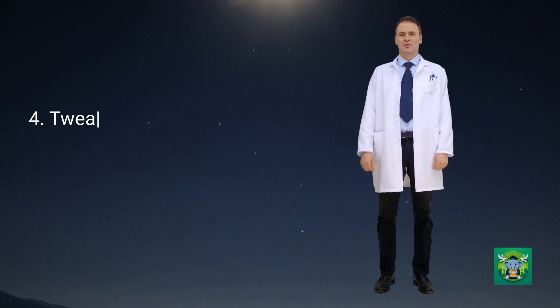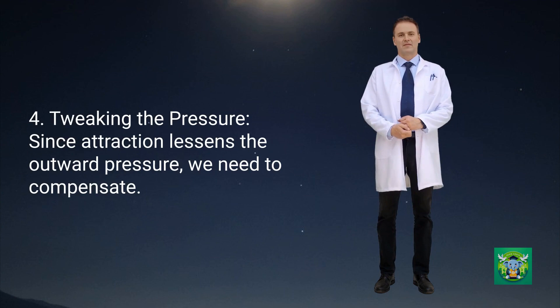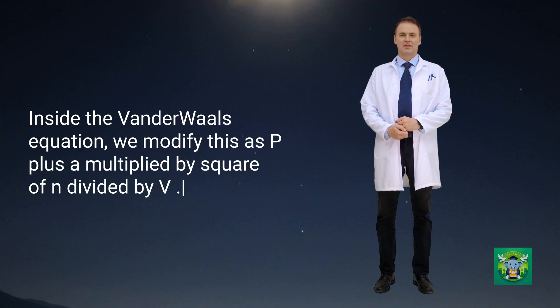Tweaking the pressure. Since attraction lessens the outward pressure, we need to compensate. Inside the Van der Waals equation, we modify this as P plus a multiplied by square of N divided by V.